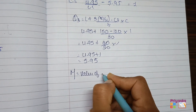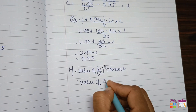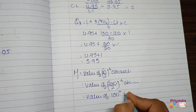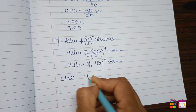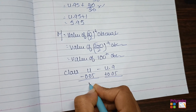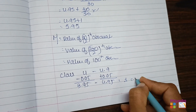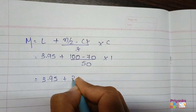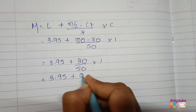The median is the n/2 = 200/2 = 100th observation. The 100th observation falls in the class 4 to 4.9. Converting to exclusive: 4 − 0.05 = 3.95 and 4.9 + 0.05 = 4.95, class length = 1, lower limit = 3.95. Median = 3.95 + (100 − 70) / 50 × 1 = 3.95 + 30/50 = 3.95 + 0.60 = 4.55.